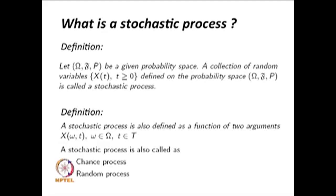If we change the sigma algebra capital F, we may end up with a different stochastic process, in which those real-valued functions are random variables for that particular (Ω, F, P). For a given probability space, the stochastic process changes for a different collection of t belonging to capital T. Once you know F you will have a collection of random variables that form a stochastic process. If you change F you may get a different stochastic process, and for a given probability space you can have more than one stochastic process depending on how you define the collection of random variables and the capital T.